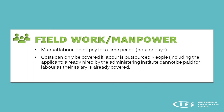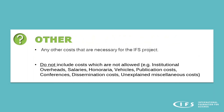Costs relating to fieldwork and manpower include manual labour, detailed in pay per hour or per day. Note that costs can only be covered if labour is outsourced — people already hired by the administering institute, including the applicant, cannot be paid for labour as their salary should be covered by the institute. If there are any other costs that do not fit into the five previous categories, you can specify them as other, as long as you describe them clearly, provide suitable justification, and ensure they are not institutional overheads, salaries, honoraria, vehicles, publication costs, conferences, or unexplained miscellaneous costs.